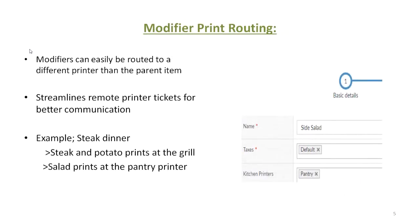Modifier print routing. Modifier print routing is very helpful in the kitchen — it cleans up and streamlines order printing. A good example is a steak dinner with a baked potato and a side salad. You can route only the side salad to the pantry printer, and the steak and the baked potato go to grill. No reason to give the pantry cook things he doesn't need. This also saves on supplies — paper and ink on the remote printers — because they're getting the least amount of detail that they need.